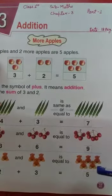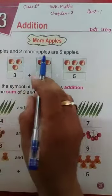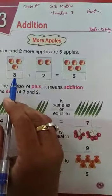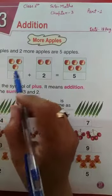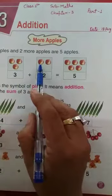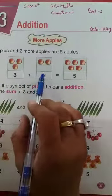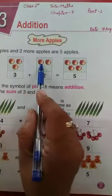So here 3 apples and 2 more apples are 5. In first box we see 1, 2, 3 apples plus 1 and 2, 2 apples. If all together we count these apples 1, 2, 3, 4, 5.